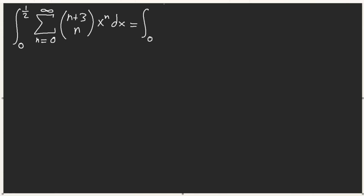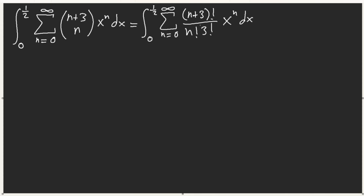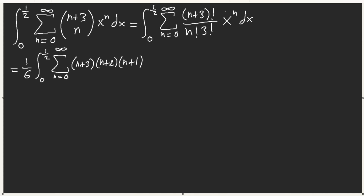The way I'm going to simplify this is to put it in terms of factorials. By definition of this binomial, this is (n+3)! / (n! · 3!) times x^n dx. When we simplify, this equals (1/6) times the sum, and simplifying the factorials we get (n+3)(n+2)(n+1) — n! cancels out — times x^n dx.